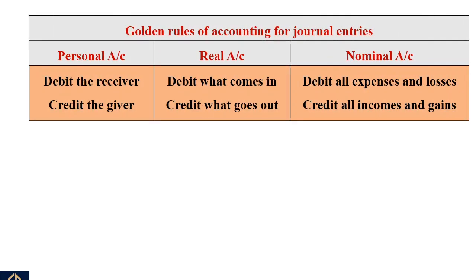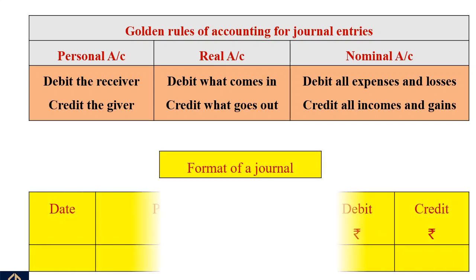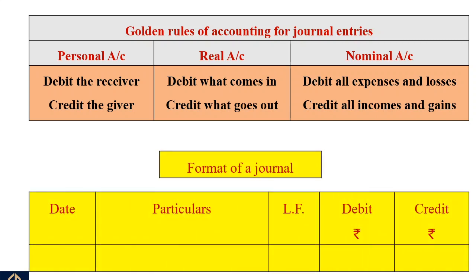Golden rules of accounting for journal entries: For personal account — debit the receiver and credit the giver. For real account — debit what comes in and credit what goes out. For nominal account — debit all expenses and losses, and credit all incomes and gains.